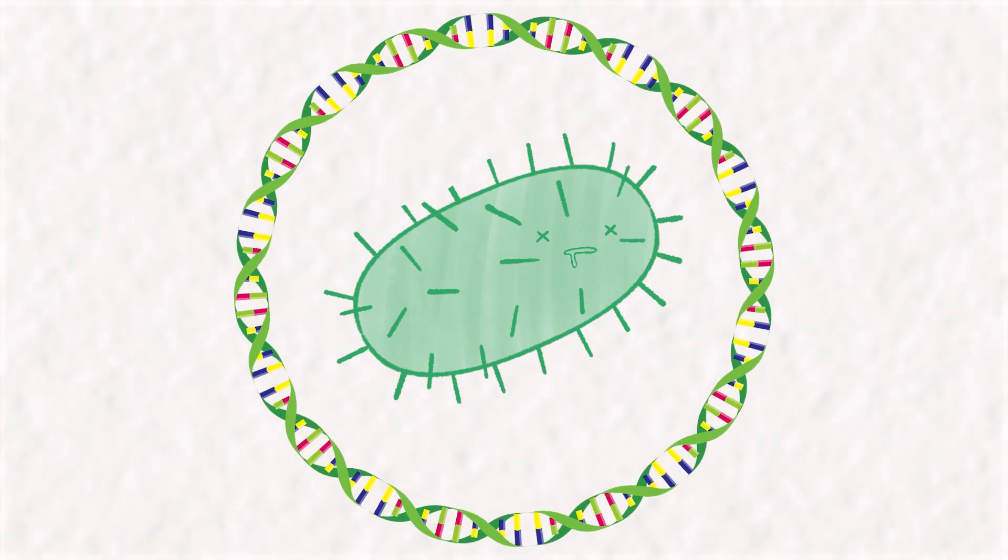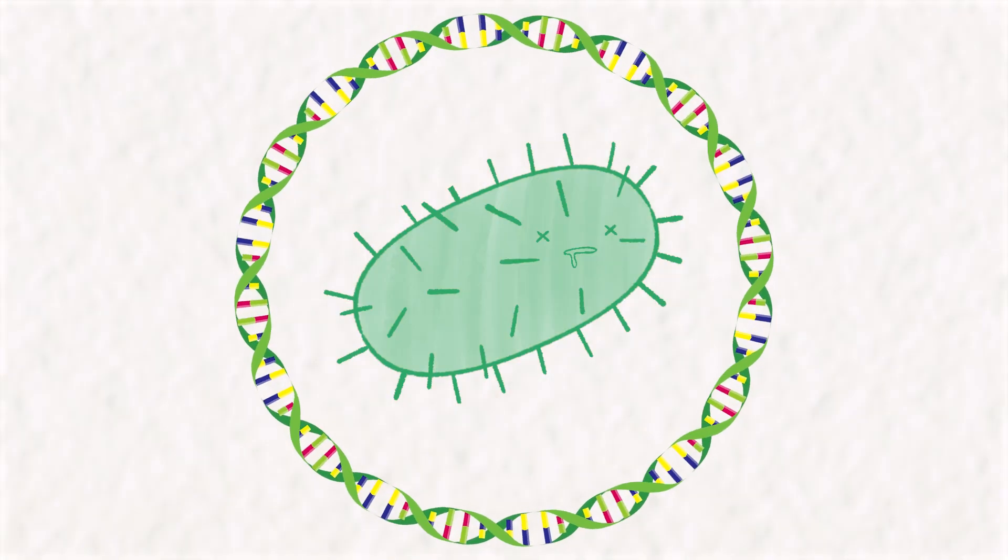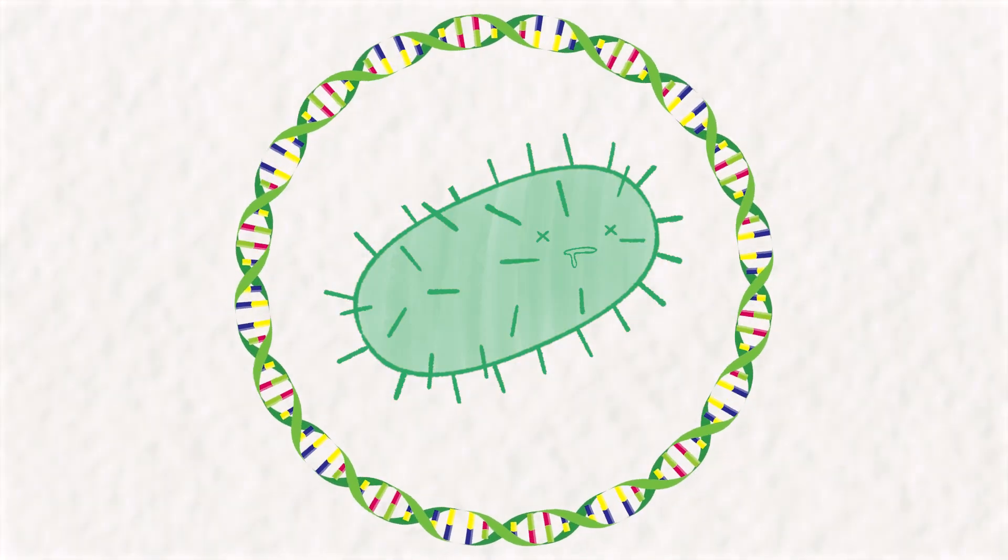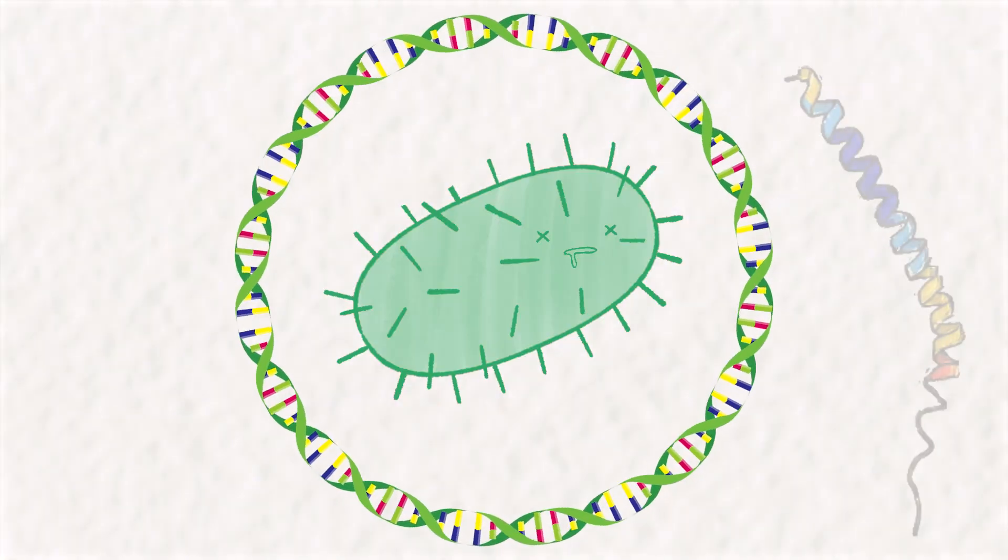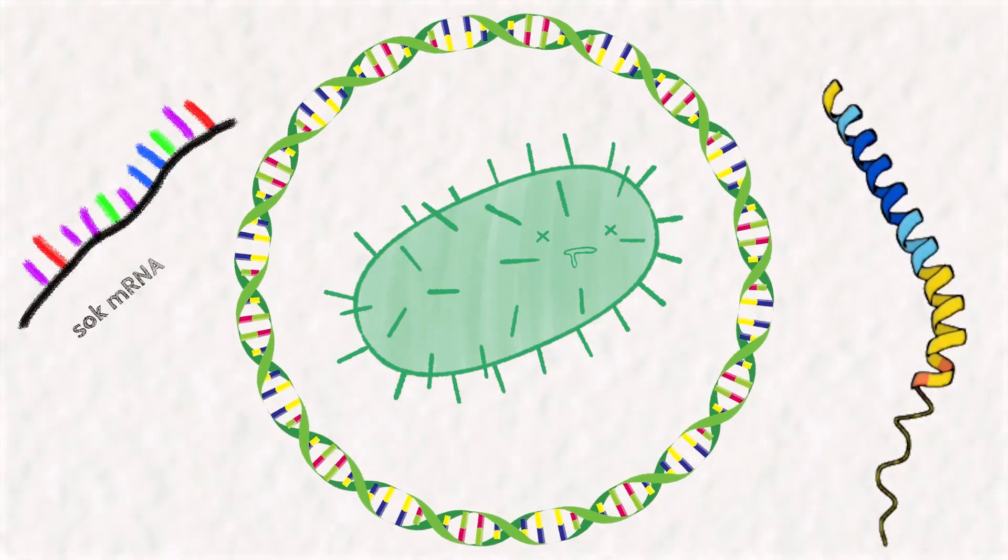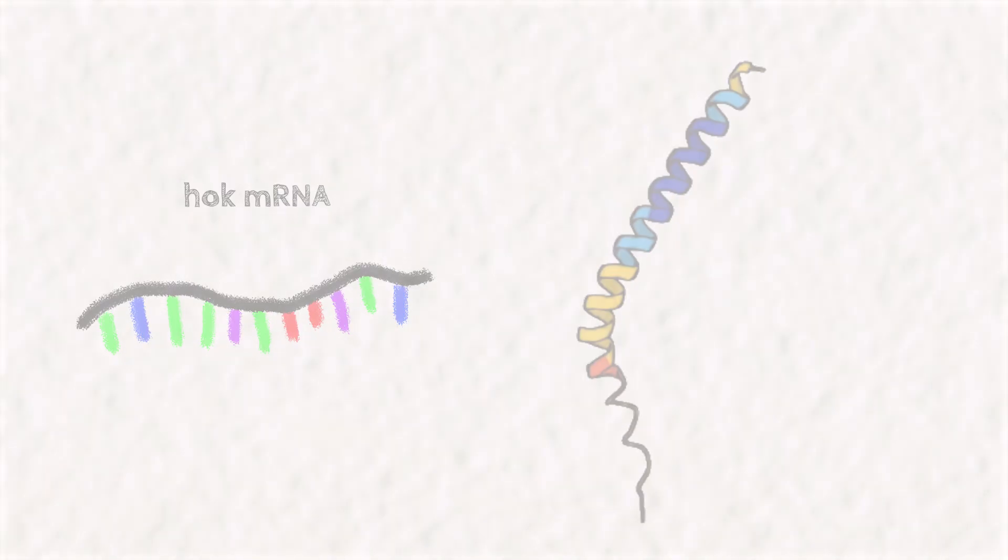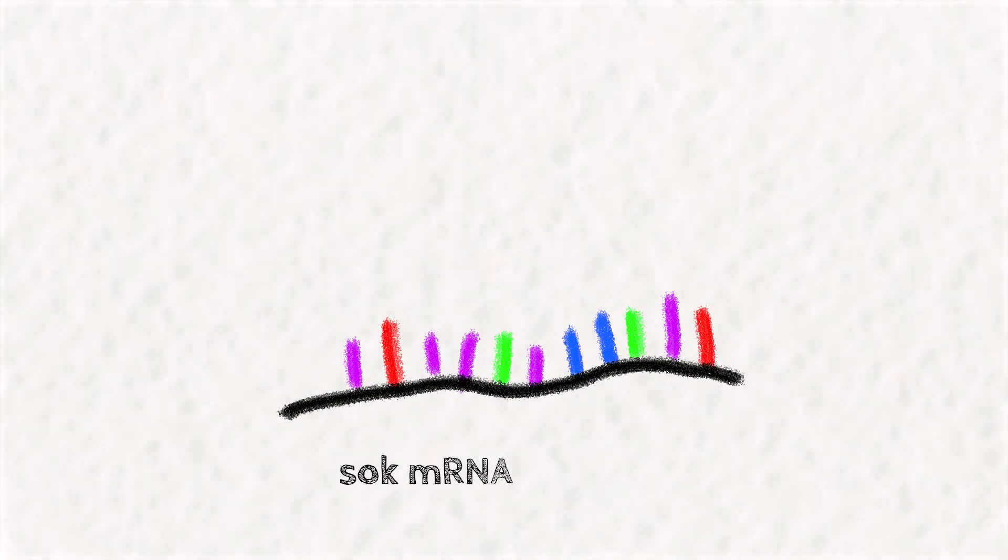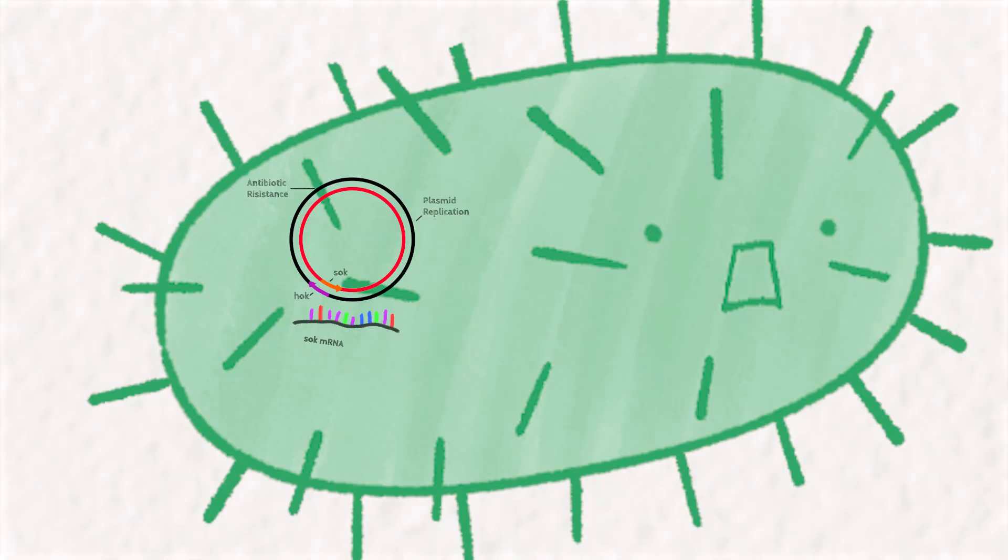The reason why this plasmid is addictive is because once a bacteria gets this plasmid, it literally cannot live without it. Having the plasmid means you are making the thing that kills you and the thing that saves you. The HOC protein and mRNA are both long-lived. The SOC mRNA, however, is very short-lived with a half-life of just 30 seconds. E. coli has to constantly be pumping out a ton of antitoxin just to stay alive.